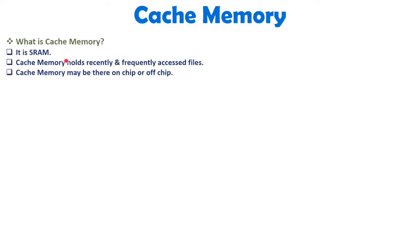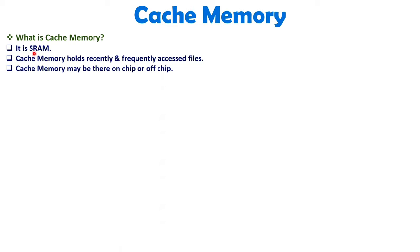When we talk about cache memory, that is SRAM — Static RAM. SRAM with cache memory is the fastest memory available with a computer system. Cache memory holds recently accessed files and frequently accessed files. This cache memory may be on-chip or off-chip, depending on the level of cache memory, which I'll explain later.